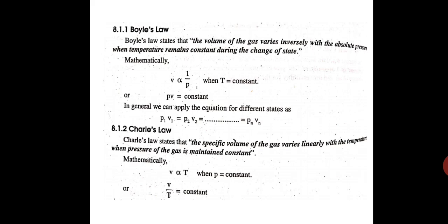When T is constant, or you can write it in other way: PV is equal to constant. So for different states, we can write P1V1 equals P2V2 equals P3V3 and so on till PnVn. This is Boyle's law. It means when temperature is constant, volume varies inversely to the absolute pressure.